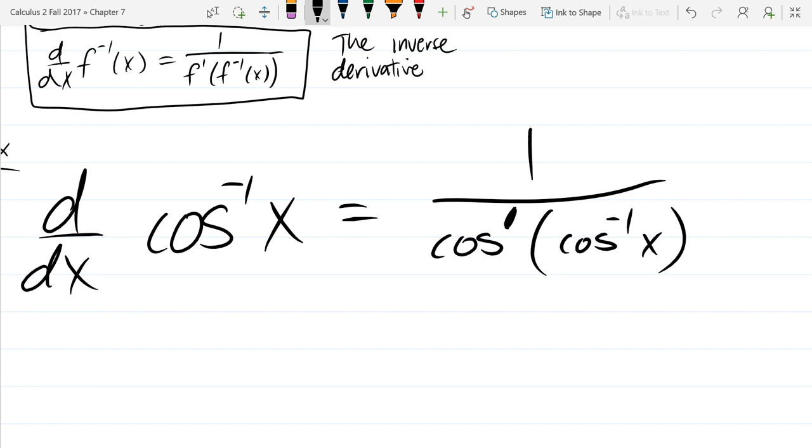So what's the derivative of cosine? Negative sine. So this is going to be 1 over negative sine of cosine inverse of x.